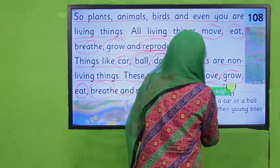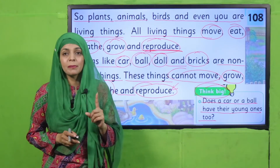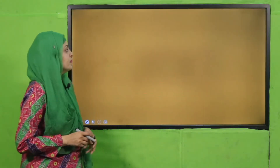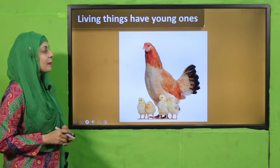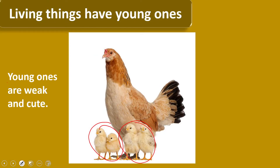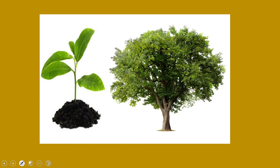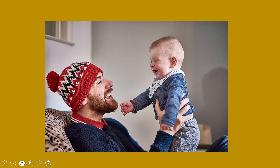Quickly think and tell me: does a car or a ball have young ones? Kya ek gaari ke ya ek ball ke chote bachche hote hain? No, that is not possible because they are non-living. Living things have young ones — jitne bhi living things hote hain, unke chote babies hote hain. Young ones are weak and cute aur yeh jo young ones hote hain, yeh kamzor hote hain and they are also cute. Here you can see the baby horse — this is called the pony. Plants have young ones which are called seedlings, which grow from tiny seeds. And human beings also have babies.